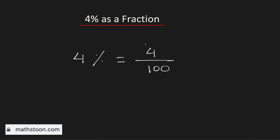Now to simplify it we will divide both the numerator and the denominator by 4. As a result we will get 1 in the numerator and 25 in the denominator. Now it is simplified. Therefore 4% as a fraction is equal to 1 over 25, and this is our final answer.